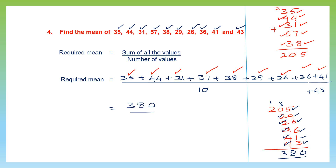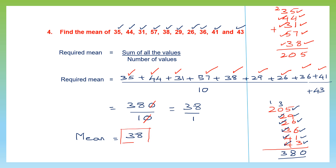Now we divide this by 10. When you divide by 10, you can cancel the zero, so this is 38 divided by 1, which is simply 38. The mean of all these values is 38.